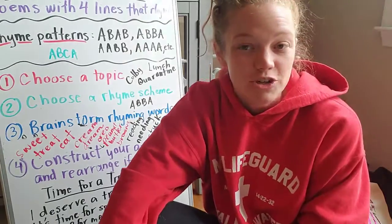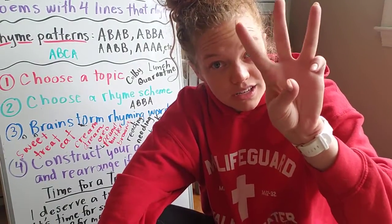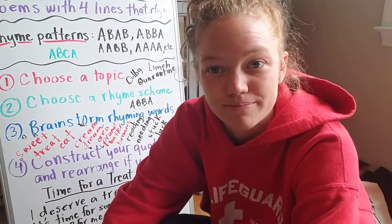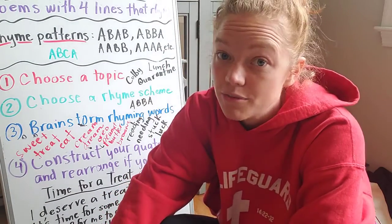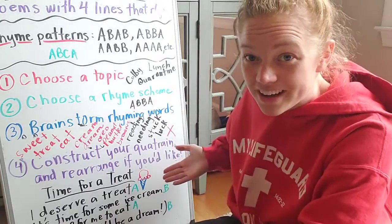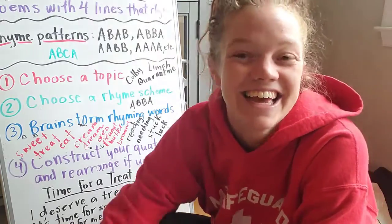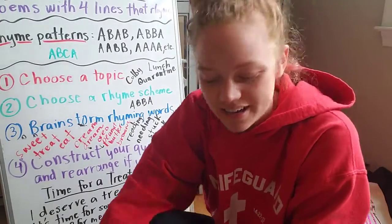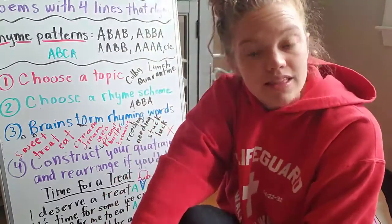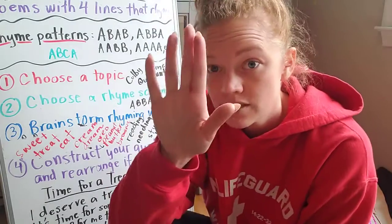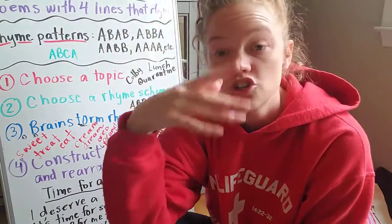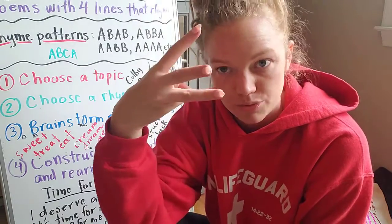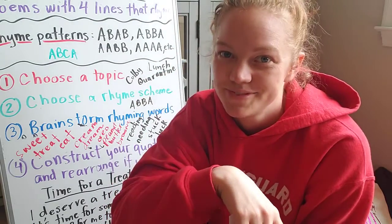I'm really excited to read your poems. You're sending me three in your Google document — three quatrains, three little poems of four lines. Remember, I am reading them, so if you send me one of my own I'm going to recognize it and know you didn't actually try to write your own. If you want to send me one of yours and then show it to me rearranged, you can — but that only counts as one of your poems. Make sure you're sending me three different ones, not the same one rearranged three times.